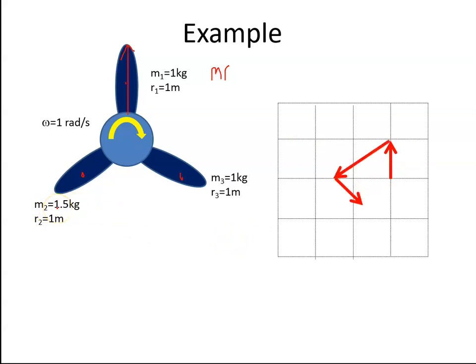Here, M2 is 1.5 by 1, and it's in that direction, so that's this guy. And M3 is 1 by 1, and that's this guy here. So that's 1, 2, and 3.